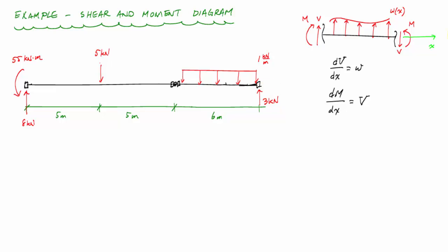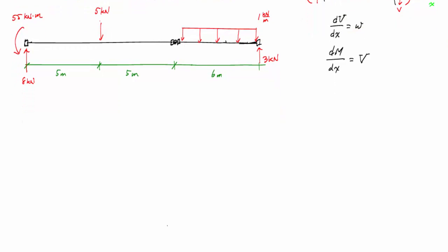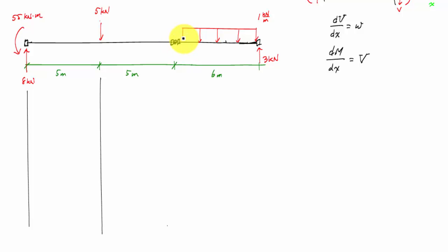Now I want to draw the shear and moment diagrams. The first thing I'd like to do is draw vertical lines at what I've defined as discontinuities — beginnings and ends of distributed loads, anywhere there's a concentrated force or concentrated moment. I have a discontinuity here because of the concentrated moment and vertical reaction. There's also a discontinuity at the beginning of the distributed load — not because of the hinge.